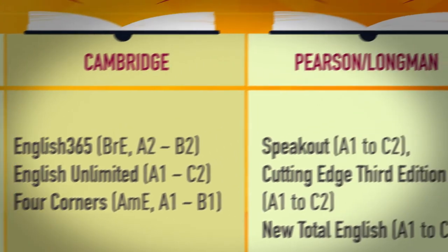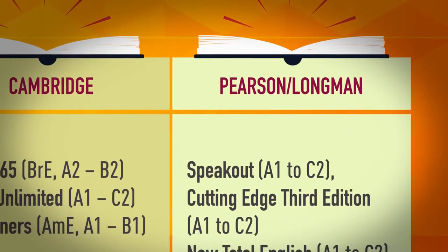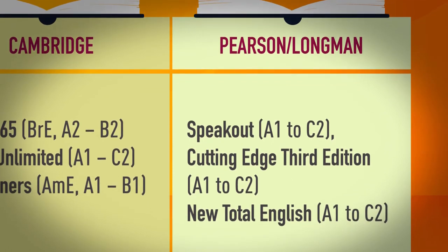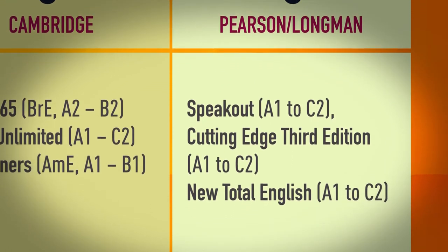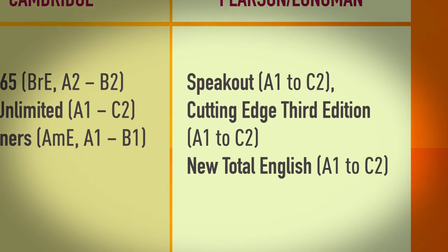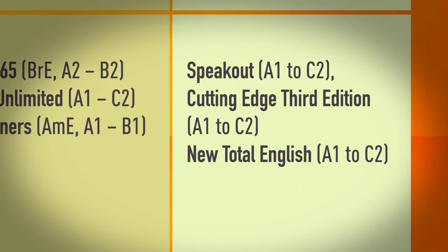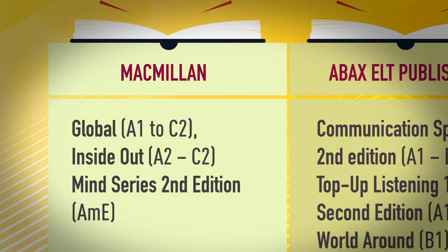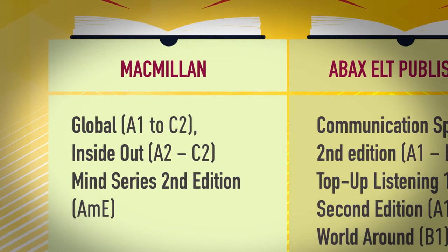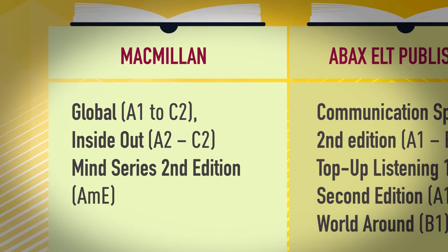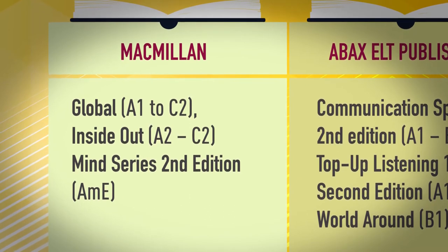Pearson Longman: Speak Out A1 to C2, Cutting Edge 3rd Edition A1 to C2, New Total English A1 to C2. Macmillan: Global A1 to C2, Inside Out A2 to C2, Mind Series 2nd Edition American English.